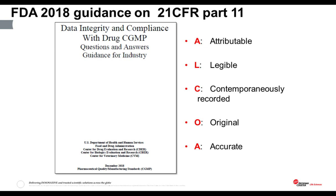In their 2018 question and answers paper on interpreting their data integrity guidance, they introduced for the first time the acronym ALCOA. In response to a question about what a good electronic record looks like, they said it should be attributable — the first A in ALCOA — to the person taking the sample. It should be legible, which implies handwriting is probably not the right way to go. It should be made contemporaneously, or at the same time the sample is taken, rather than at a later time from paper printouts. And the record should be the original record, and the data it contains should be accurate.